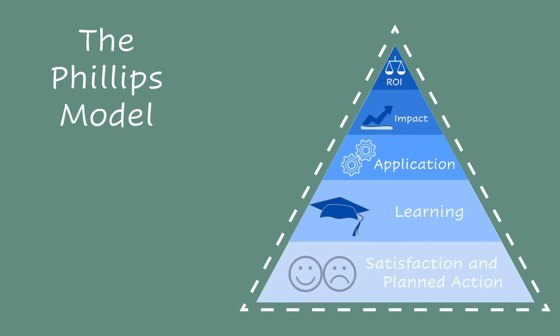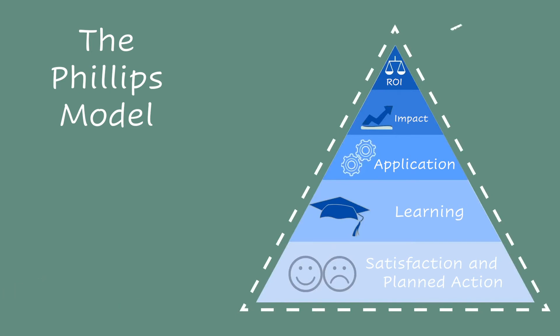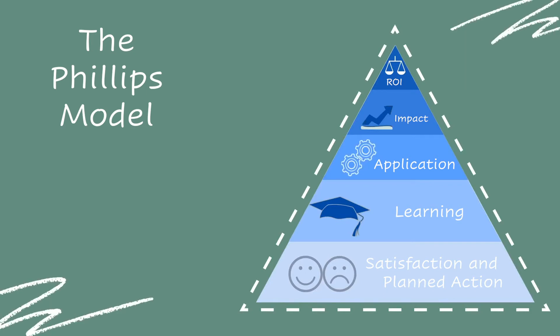The next model I want to look at was put forward by a gentleman called Jack Phillips. Jack Phillips is known to many people because we've taken part of what Phillips was talking about and tacked it onto the top of Kirkpatrick's model to make a fifth level. However, Jack Phillips produced an evaluation model in its own right. As Kirkpatrick grew in popularity through the 1970s, many academics and business practitioners wanted to build and expand on it, and Jack Phillips was one of those people. In 1980, he produced his own book called Return on Investment in Training and Performance. There are many similarities between his model and Kirkpatrick's, but the main differences are the two top layers of the pyramid.